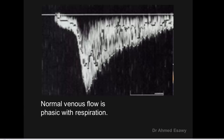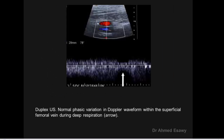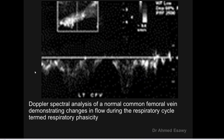Venous flow velocity increases with expiration and decreases with inspiration. Examples of phasic flow: normal phasic variation of venous flow in the superficial femoral vein during respiratory variation — increase in expiration, decrease in inspiration. Spectrum analysis of the normal common femoral vein shows respiratory variation of phasic flow.